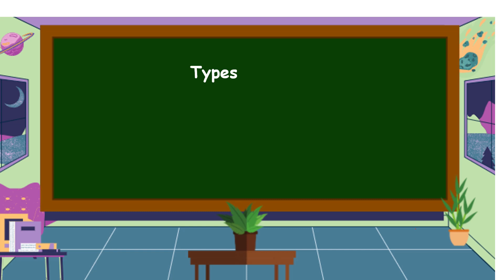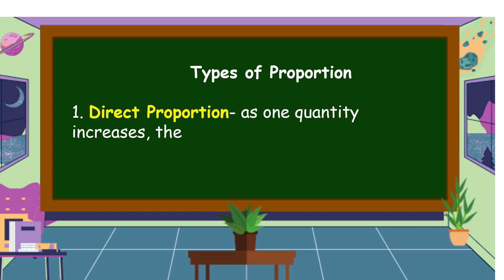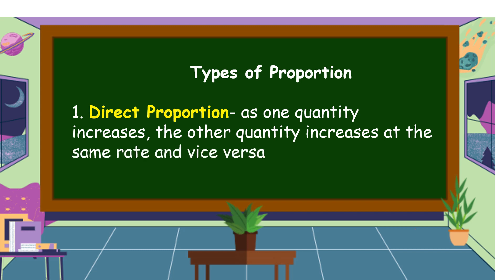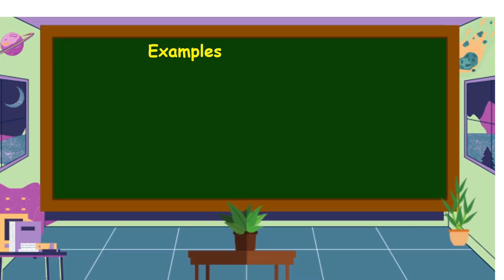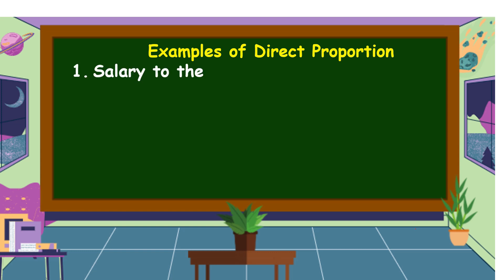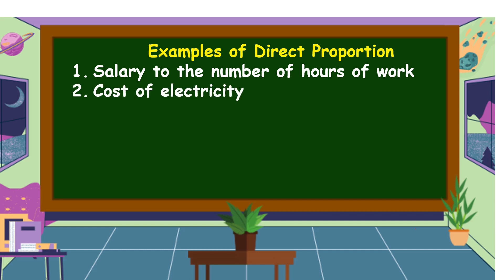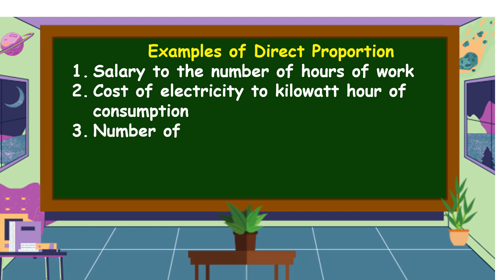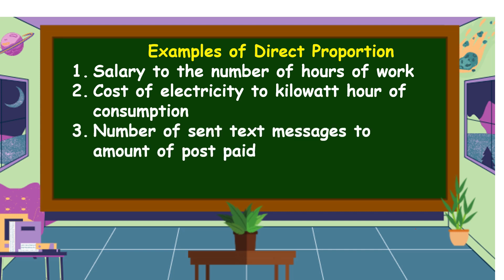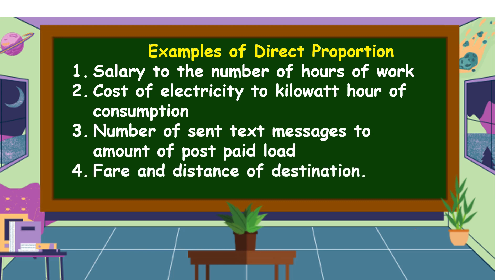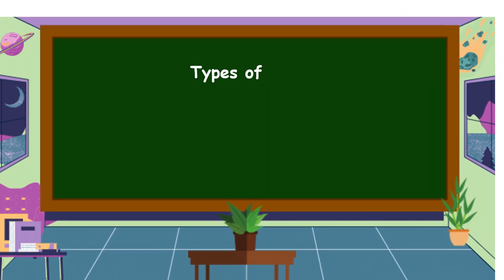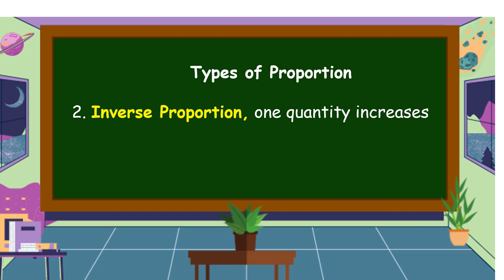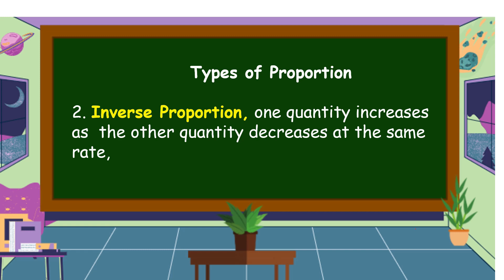The first type of proportion is direct proportion. When we say direct proportion, as one quantity increases, the other quantity increases at the same rate, and vice versa — or as one quantity decreases, the other quantity also decreases. Examples of direct proportion: salary to the number of hours of work, cost of electricity to kilowatt hour of consumption, number of sent text messages to amount of postpaid load.